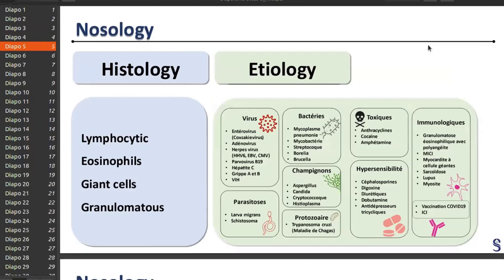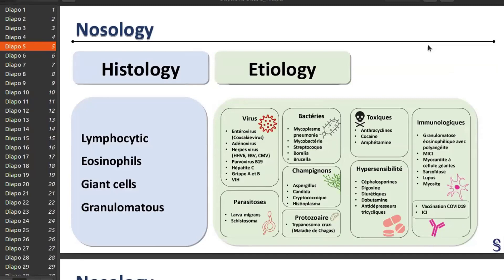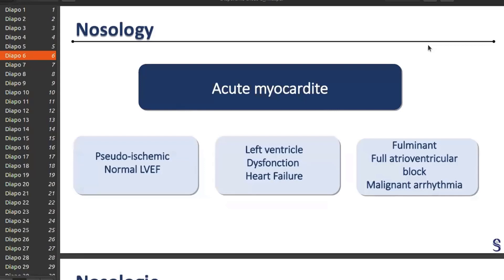The etiology is very large. It can be a virus, bacteria, toxic agents like cocaine, some parasites, and some immune diseases. As I said, we don't really know the prognosis for all of these forms of histology and for all of these etiologies.